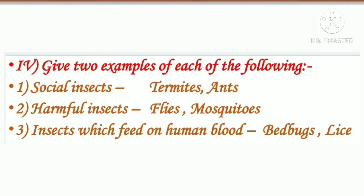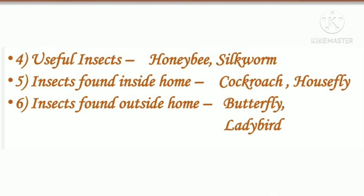Fourth question: give two examples of each of the following. First one: social insects — termites, ants. Second one: harmful insects — flies, mosquitoes. Third one: insects which feed on human blood — bed bugs and lice. Fourth one: useful insects — honey bee, silkworm.